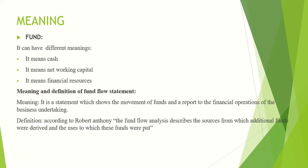What do you mean by net working capital? Working capital is nothing but your current assets minus current liabilities. Net working capital basically shows the excess of your current assets over current liabilities. For example, if you have current assets of 5 lakhs and current liabilities of 2 lakhs, your working capital is 5 lakhs minus 2 lakhs, which equals 3 lakhs.